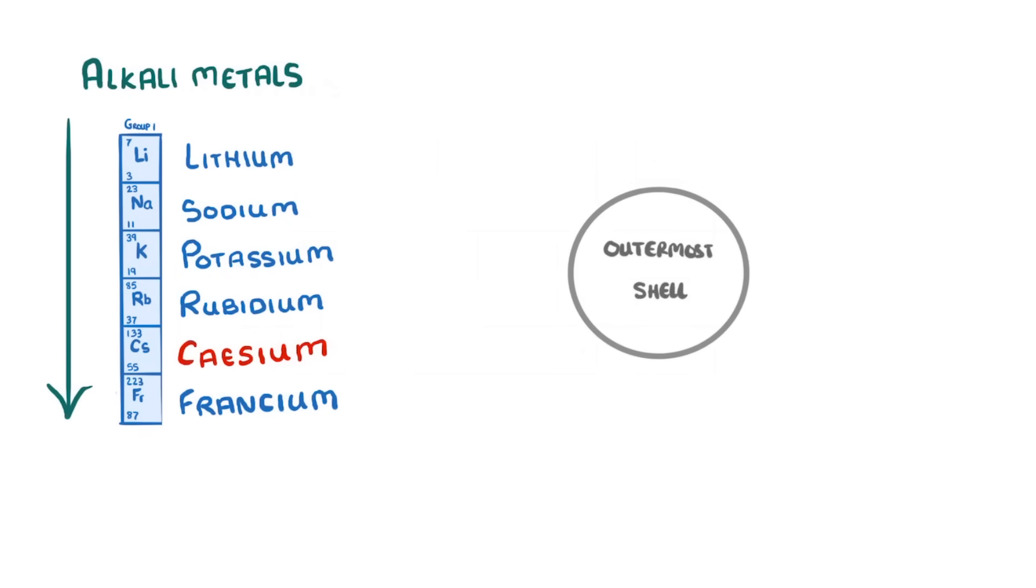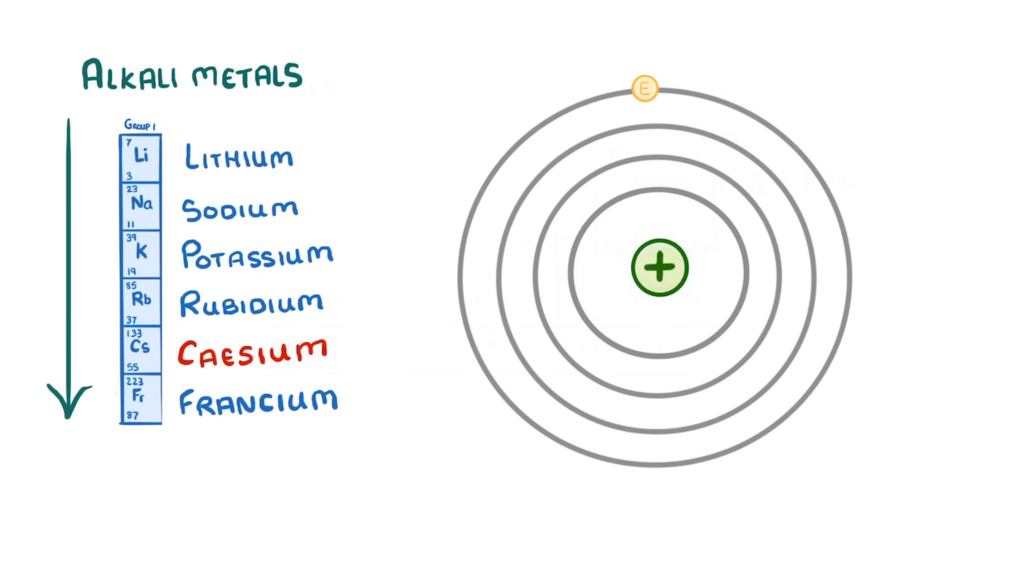Well, as you go down the group, the atom's radius gets bigger. And so the outermost shell gets further and further away from that positive nucleus.